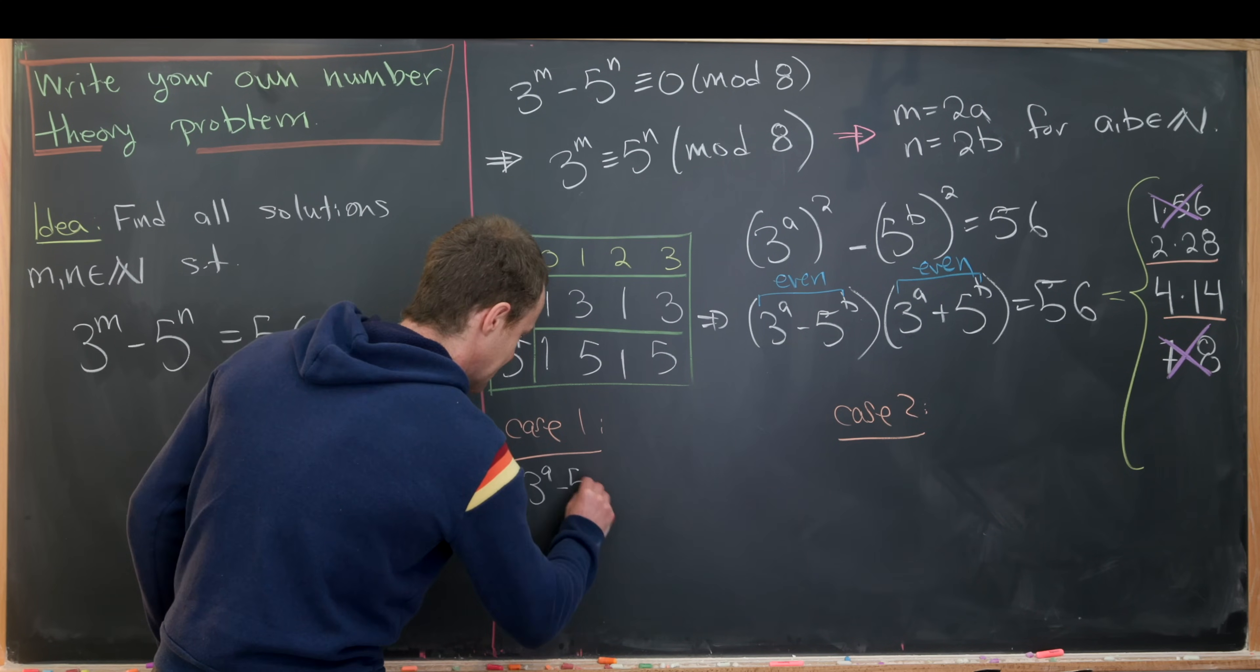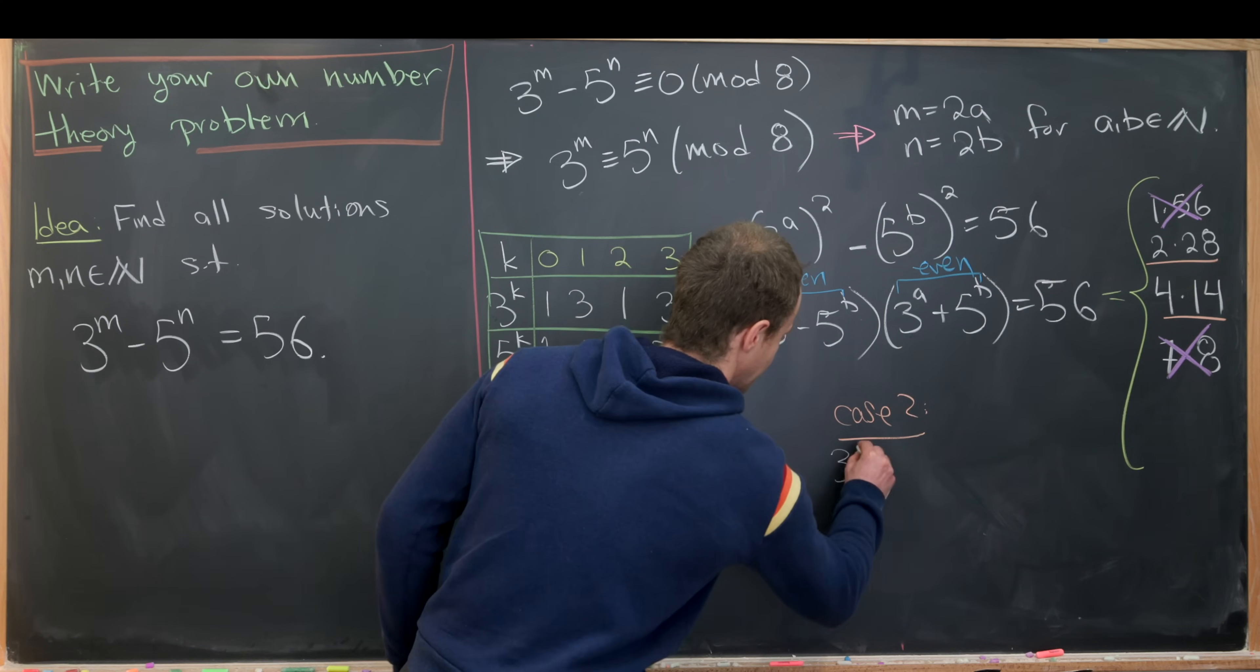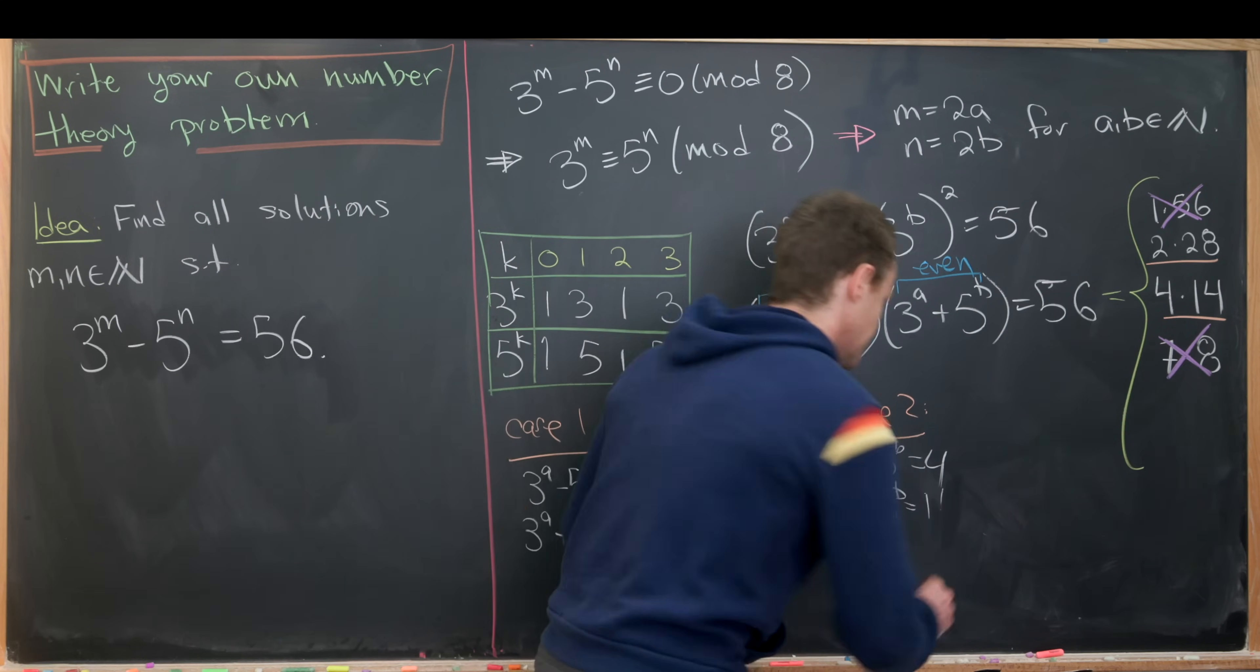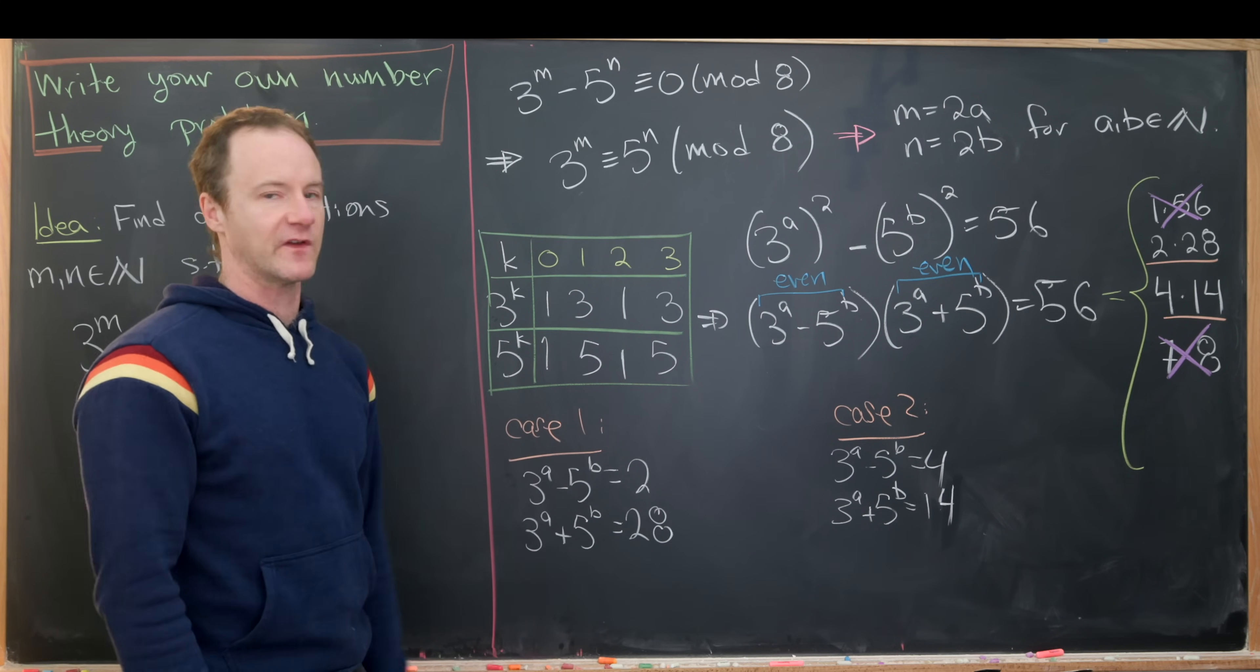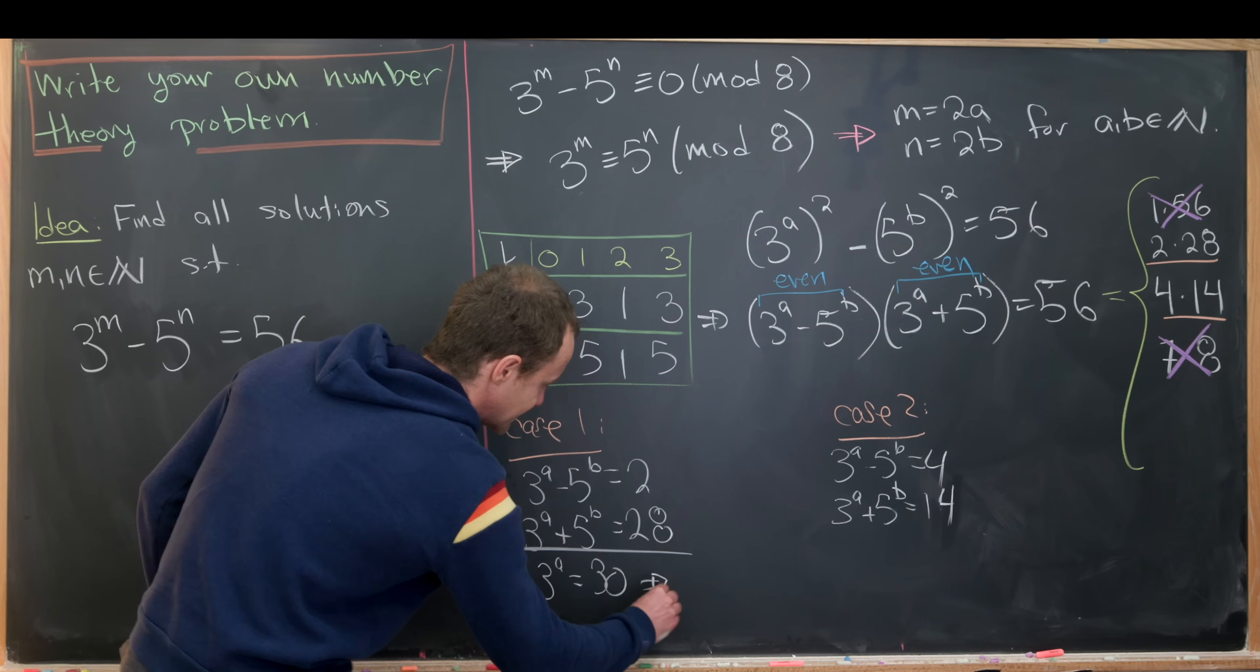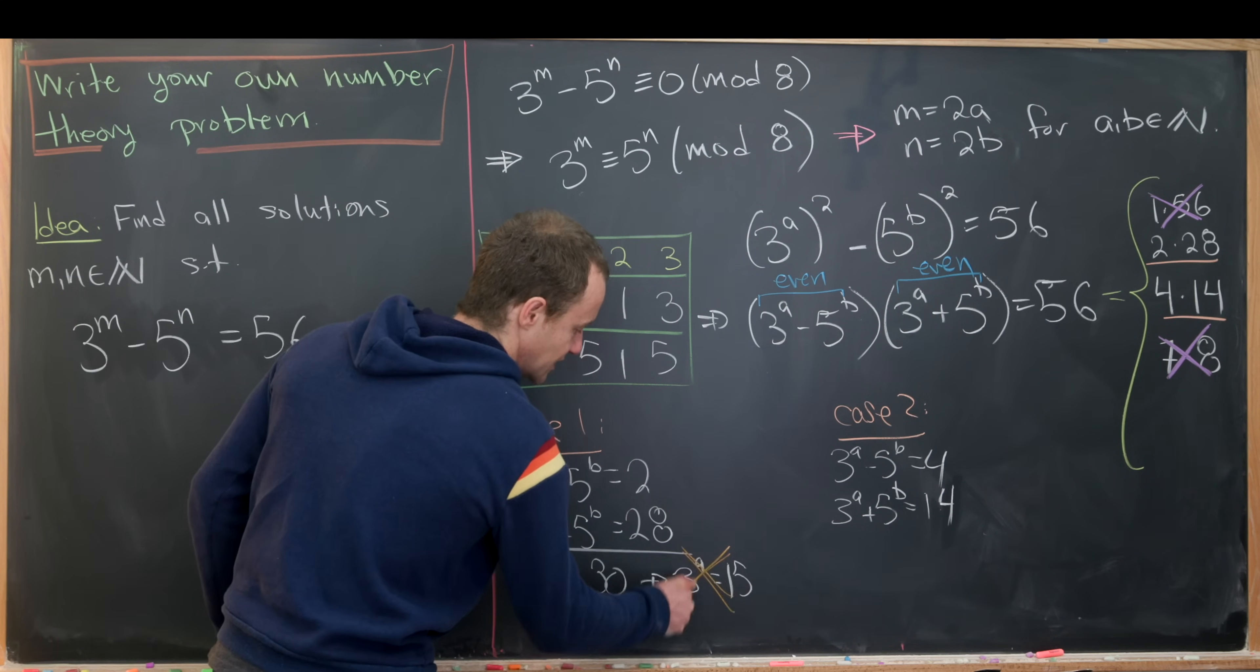Those deal with these two factorizations. We have 3 to the a minus 5 to the b equals 2, and 3 to the a plus 5 to the b equals 28—that's case one. Then we have 3 to the a minus 5 to the b equals 4, and 3 to the a plus 5 to the b equals 14. We can think about this as a system of two linear equations with unknowns 3 to the a and 5 to the b. If we add these two equations we'll get 2 times 3 to the a equals 30, which tells us that 3 to the a equals 15. But 15 is not a multiple of 3, so that means there's no solution from this.